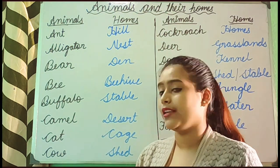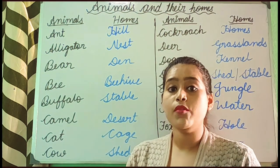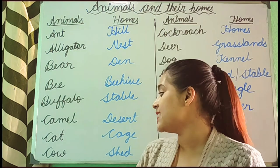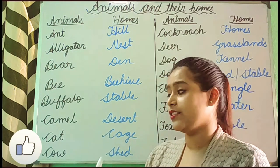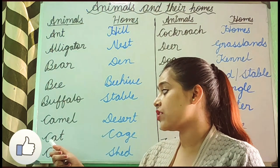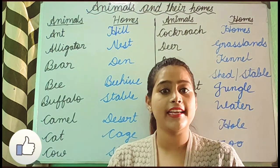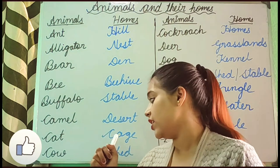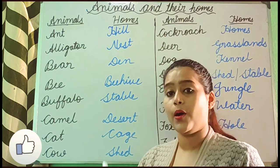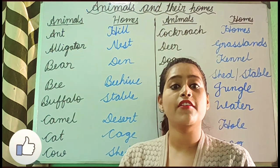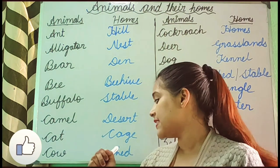Next, Camel. The home of a camel is desert. Next, Cat. The home of a cat is cage. Now, Cow. The home of a cow is sea.